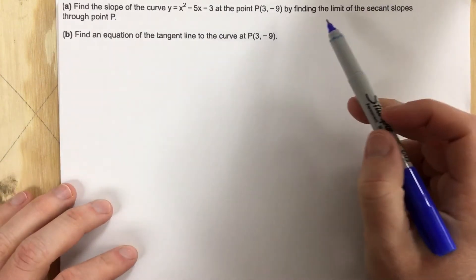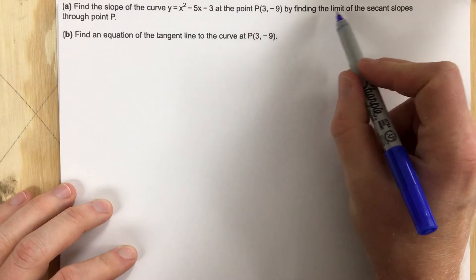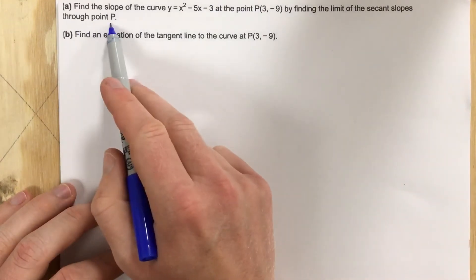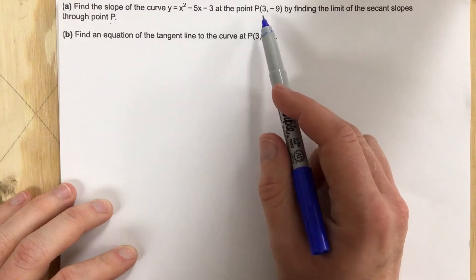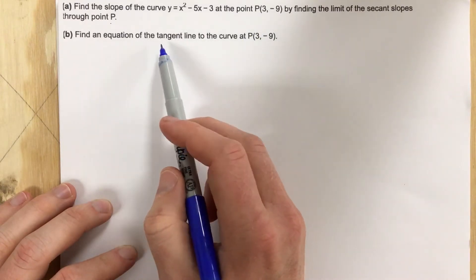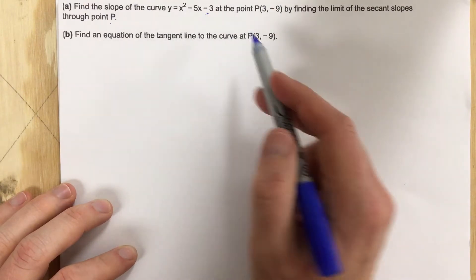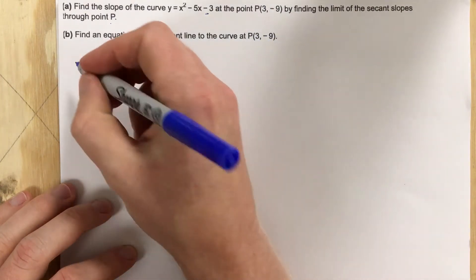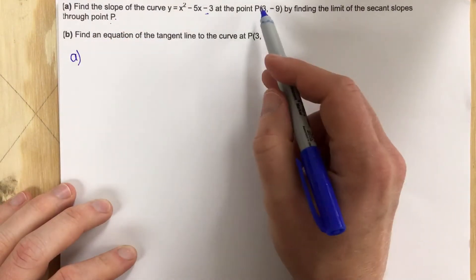So what they want us to do is find the limit of the secant slopes through point P. They essentially want us to find the slope at point P, and then write an equation that's tangent to this curve at this point.